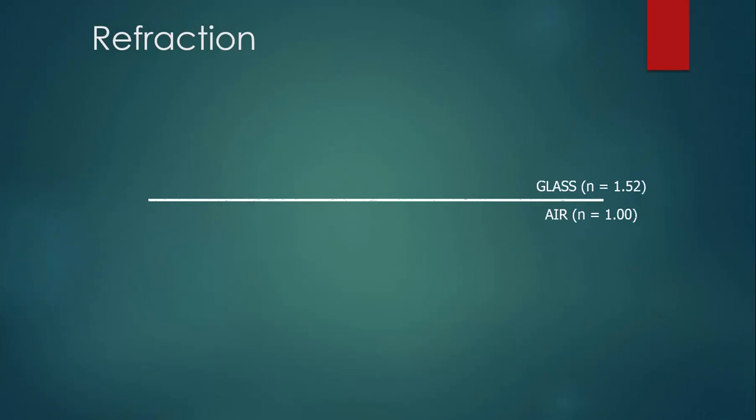Here's another example. This time, the line represents the boundary between glass and air. Once again, we have an incident ray. We'll measure the angle of this incident ray between itself and the normal. We'll call that theta 1, the angle of incidence.